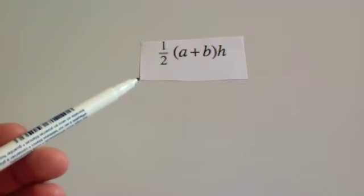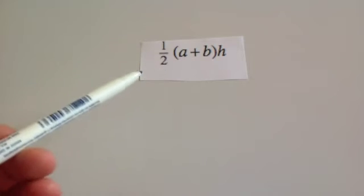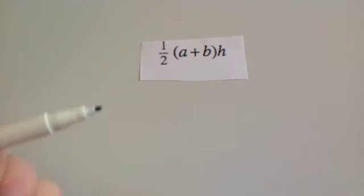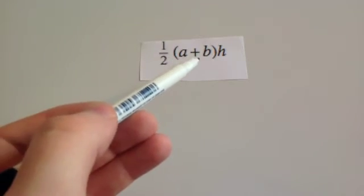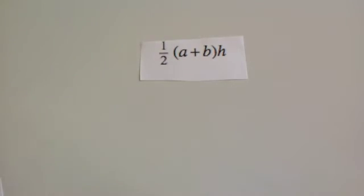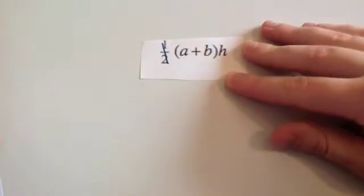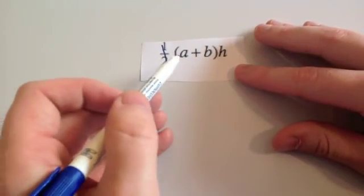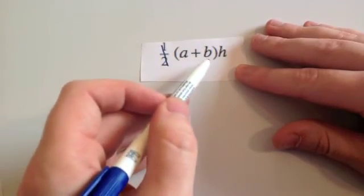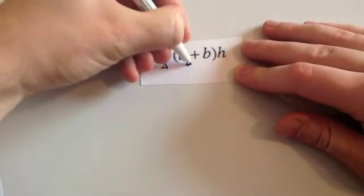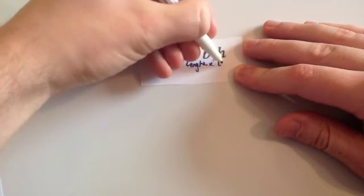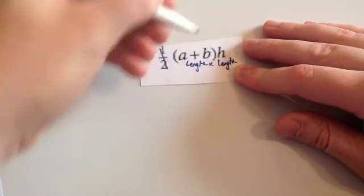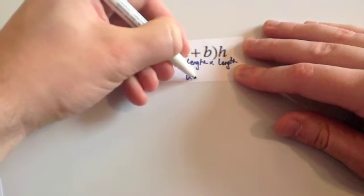An important tip: if you ever have a number or a pi in any of these formulas, just ignore them — they're not a length, so you don't need to worry about them. So for a half times (A plus B) times H: cross off the half, because that's just a number. You're left with a length plus a length, which is a bigger length. You then times it by H, which is a length. A length times a length is an area. So this is an area — which is the area of a trapezium.